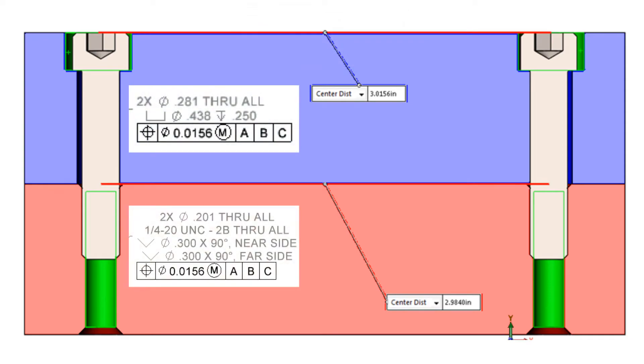Because this is a positional tolerance, the feature control frame shown here would be added to the hole callout for both holes.